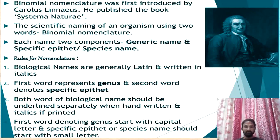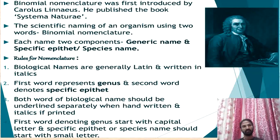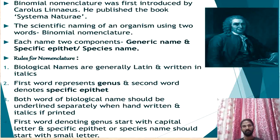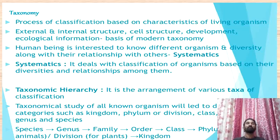In plant nomenclature, tautonyms are not used. Tautonyms means genus and species names are the same. In zoological nomenclature, tautonyms are accepted — for example, the cobra's scientific name is Naja naja, where both genus and species names are the same. But in botanical nomenclature, tautonyms are not accepted. For example, the apple was originally Malus malus, but since both generic and specific epithet are the same, it is not acceptable by ICBN rules — so the name was changed to Pyrus malus.